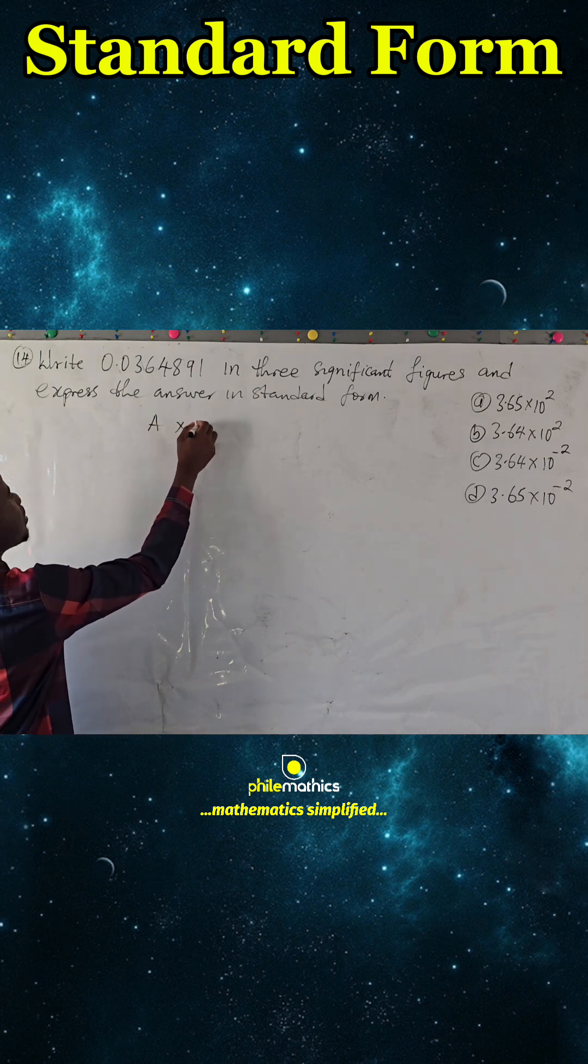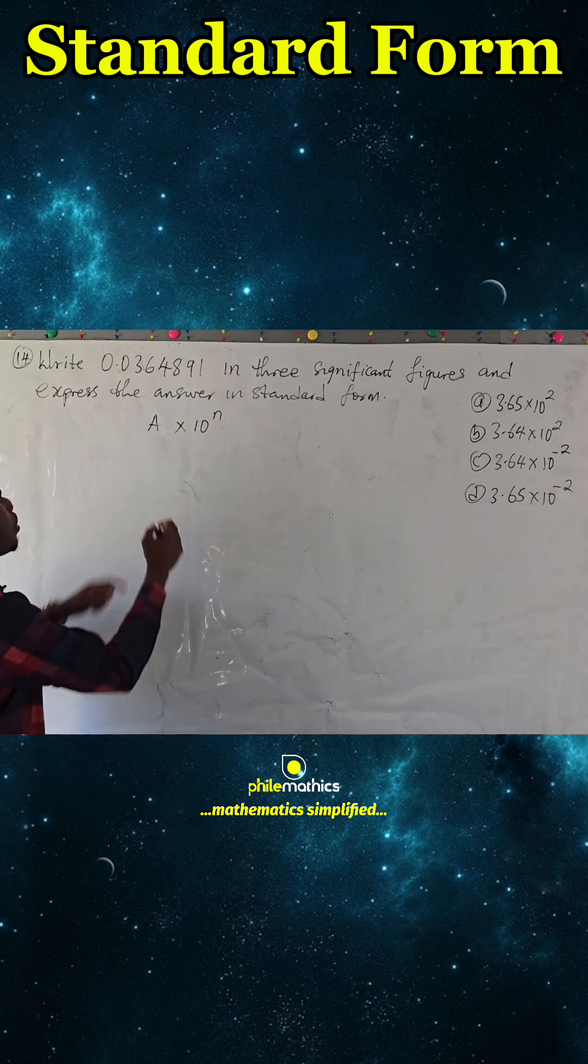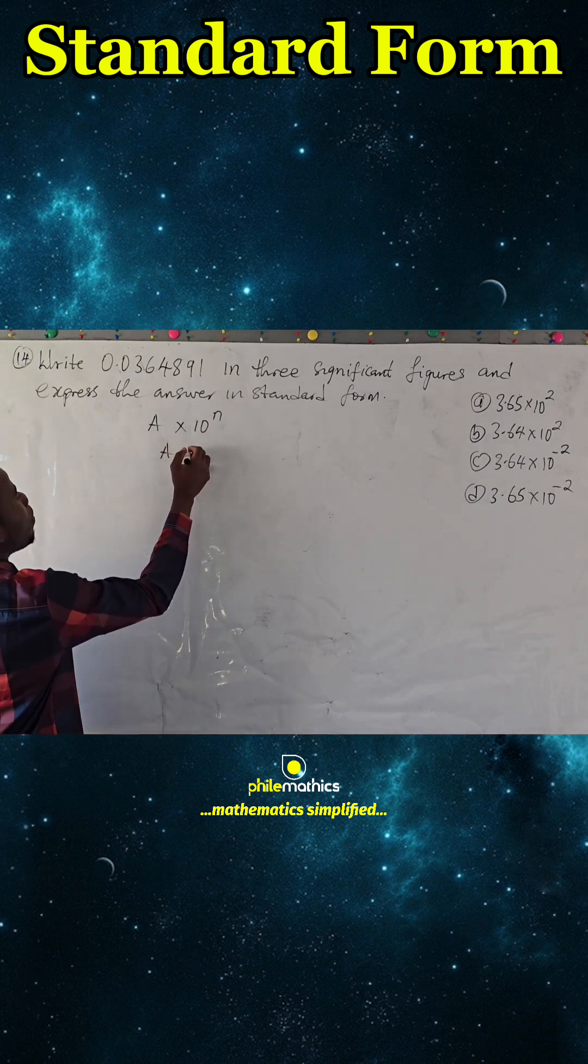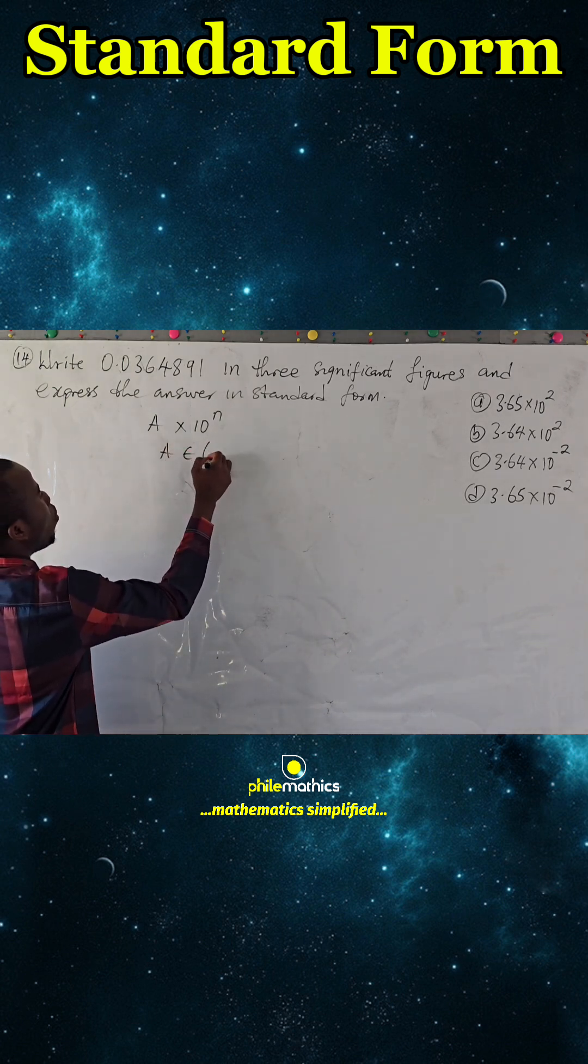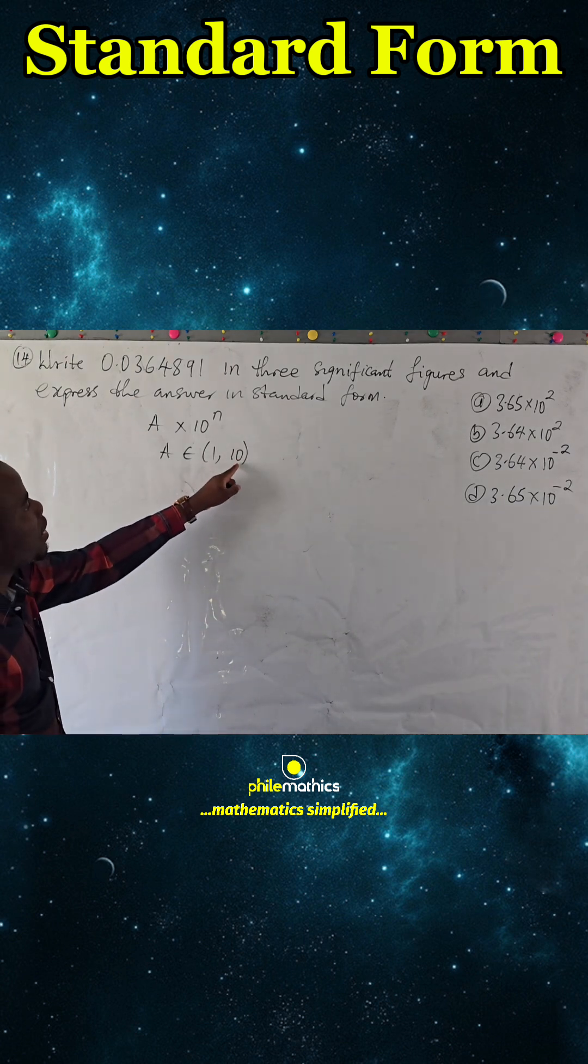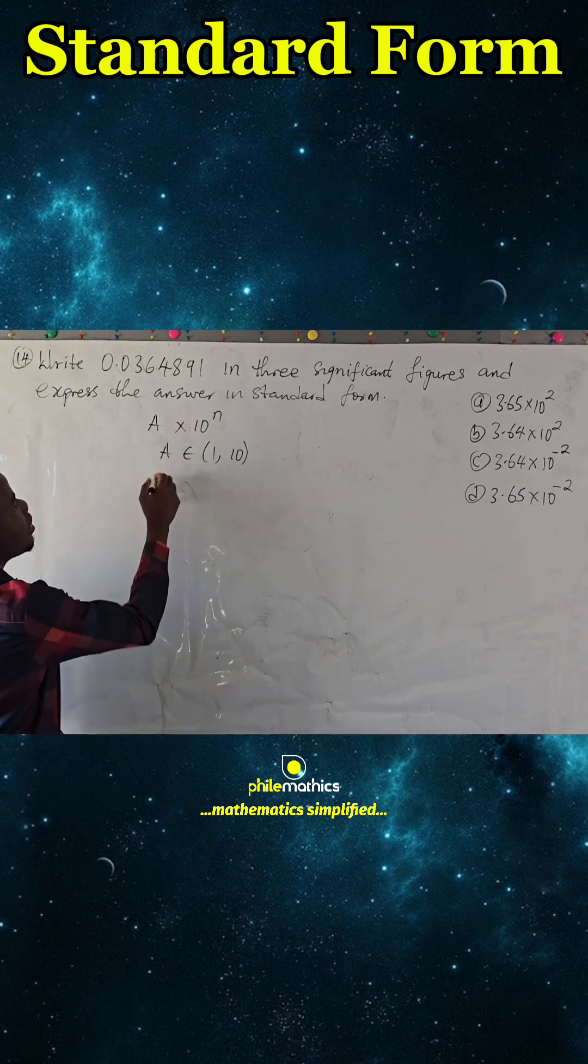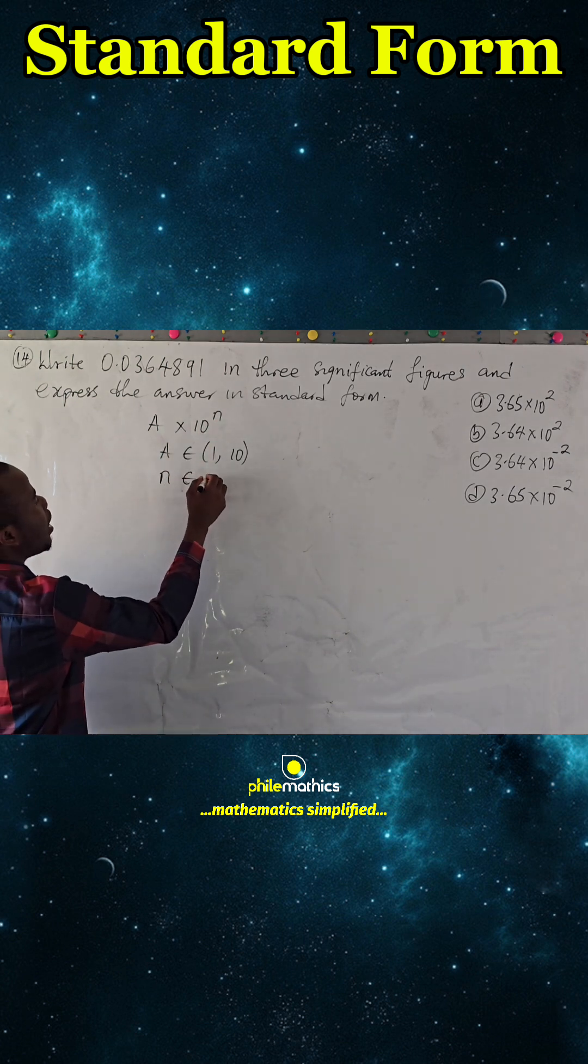a times 10 to the power n, where a is a number between one and ten (exclusive) and n is an integer.